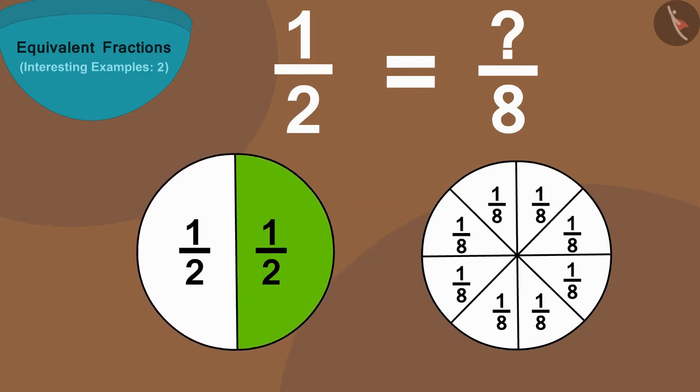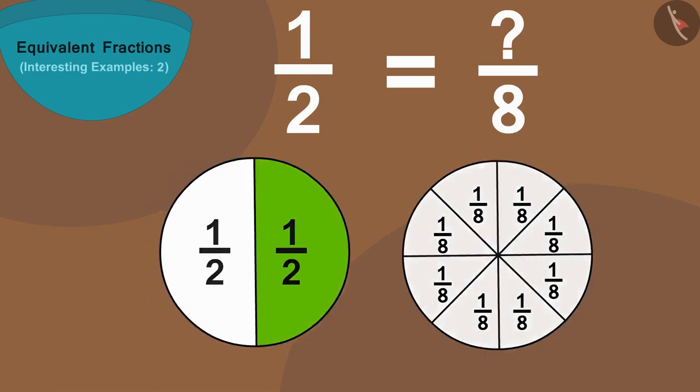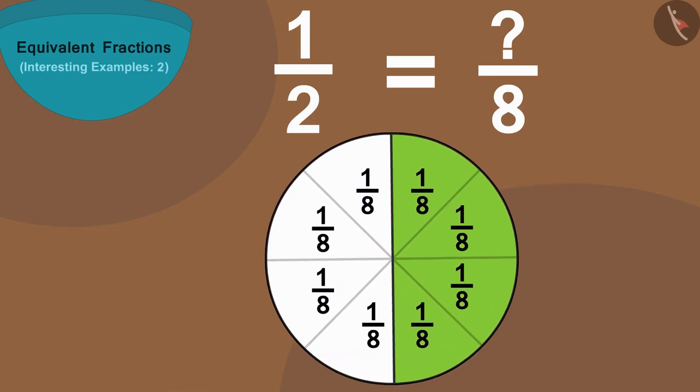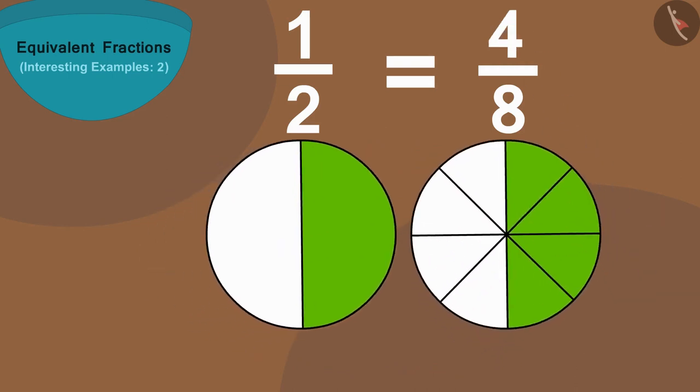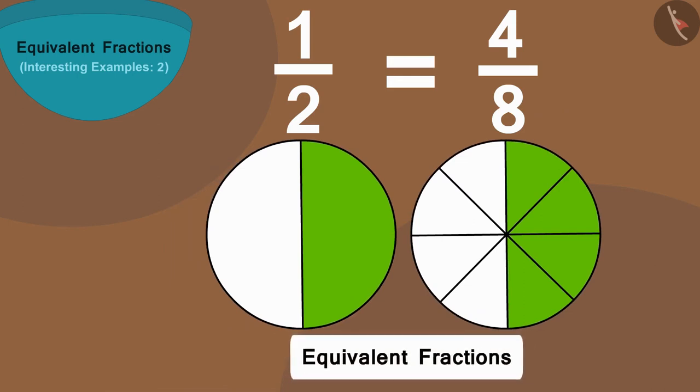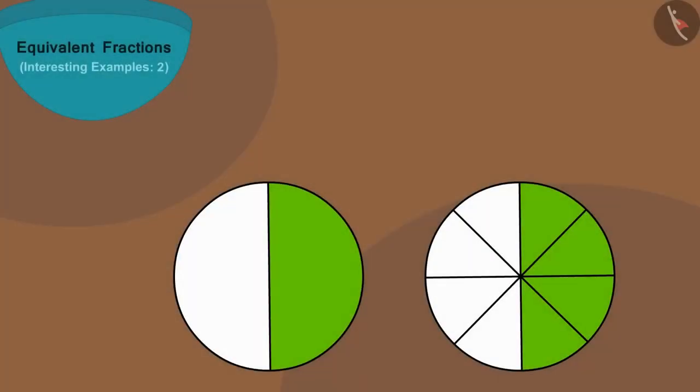If we put these on top of each other, then we can see that 8 parts of this circle are equal to 2 parts of the first circle, and 4 parts of this circle is equal to one colored part of the first circle. Therefore we will color in 4 parts of this circle. In this way we have the numeral above our equivalent fraction as 4. In this way, 1/2 is equal to 4/8.